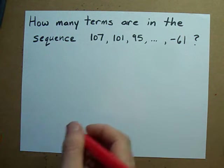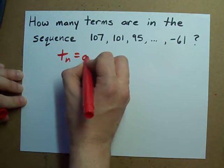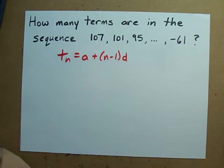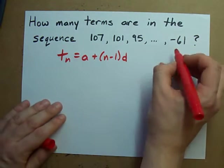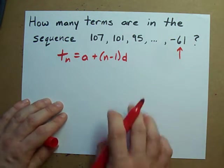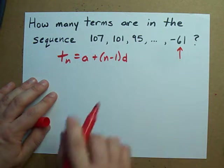Let me just rewrite that here for y'all. Tn equals a plus n minus 1 times d. So, we really want to know which term this is. Is it the 50th? Is it the millionth? Is it the 72nd? Who knows? Let's find out.